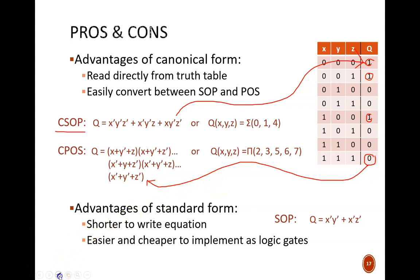However, this exhaustive listing of all conditions often makes the canonical equations cumbersome. The standard SOP equation that is identical to both of these lengthy equations is a nifty q equals x'y' or x'z'. That is much shorter to write, obviously, and that leads to the big practical advantage of making circuits cheaper and simpler to wire. Because of this, we will be working with standard equations more often.